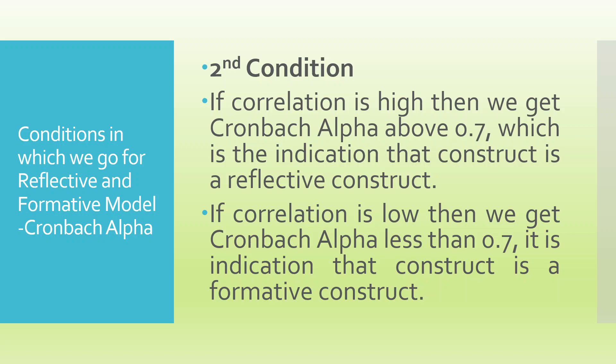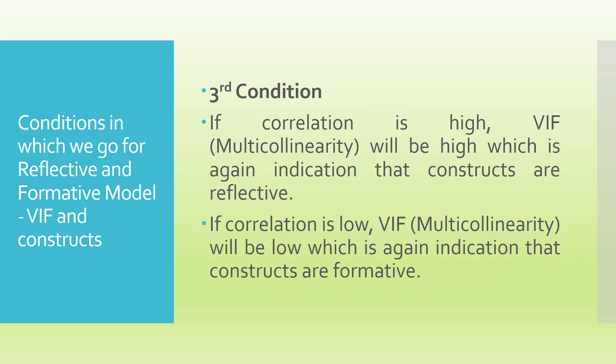Second condition: if the correlation is high then we get Cronbach's alpha above 0.7, which is an indication that the construct is a reflective construct. But if correlation is low then we get Cronbach's alpha less than 0.7, indicating a formative construct. Third condition: if correlation is high then the Variance Inflation Factor (VIF) will be high, again indicating the constructs are reflective. If correlation is low, VIF will be low, indicating the constructs are formative.